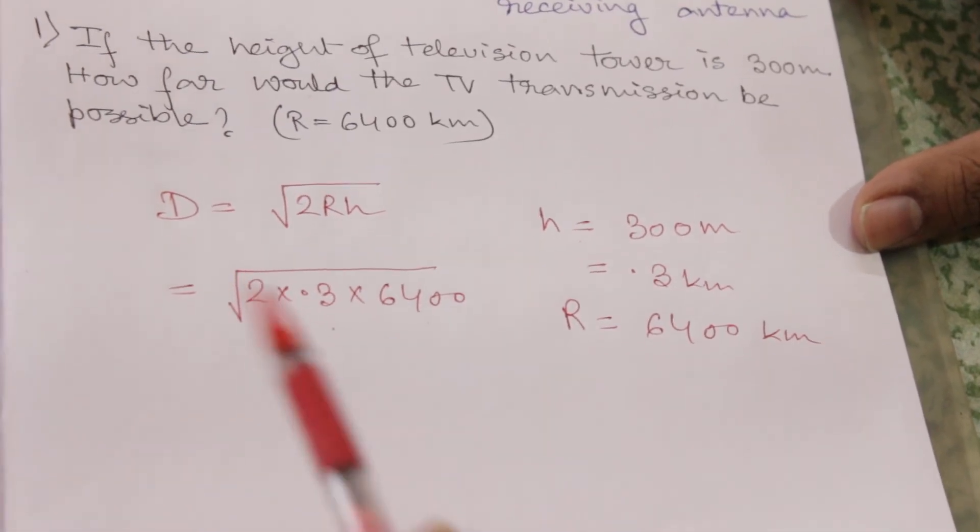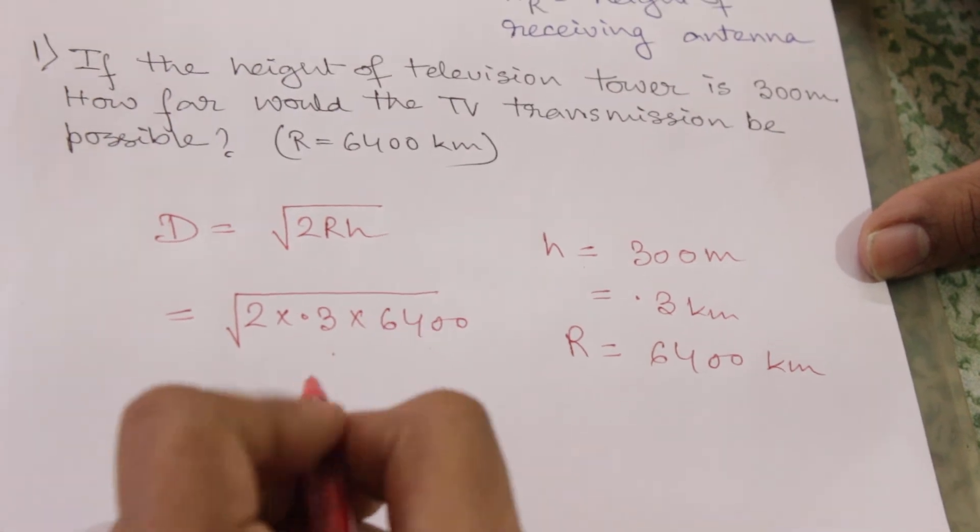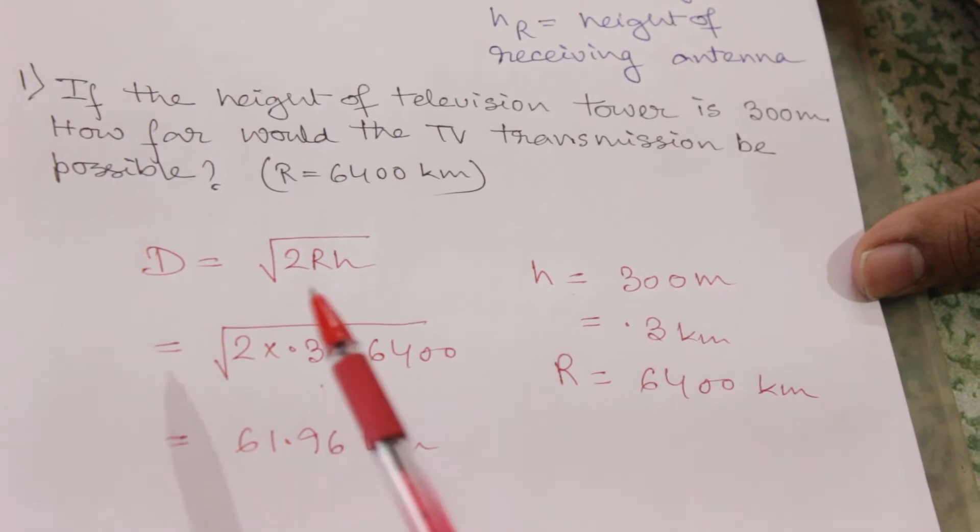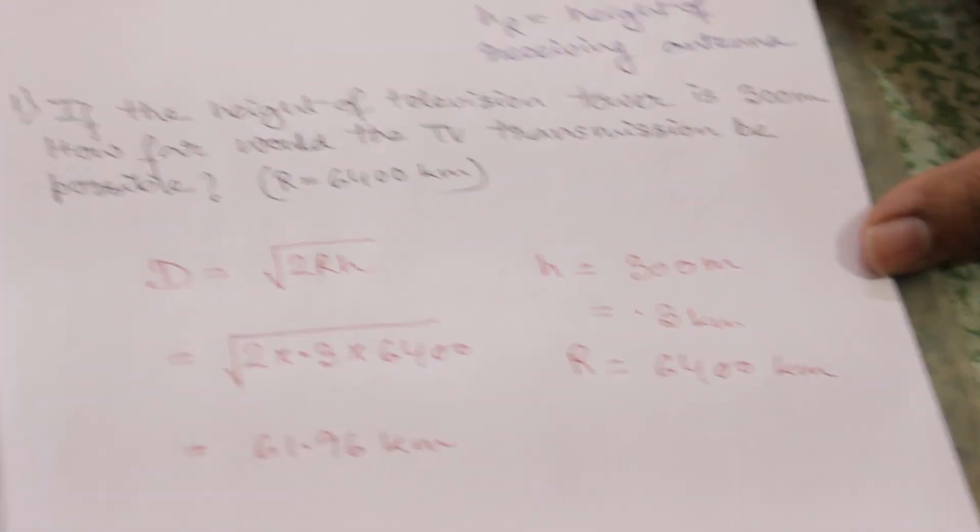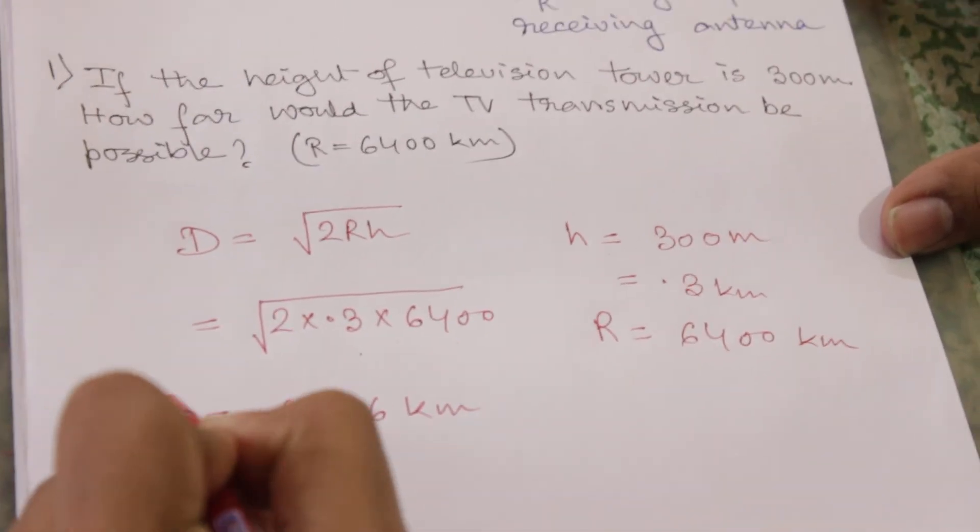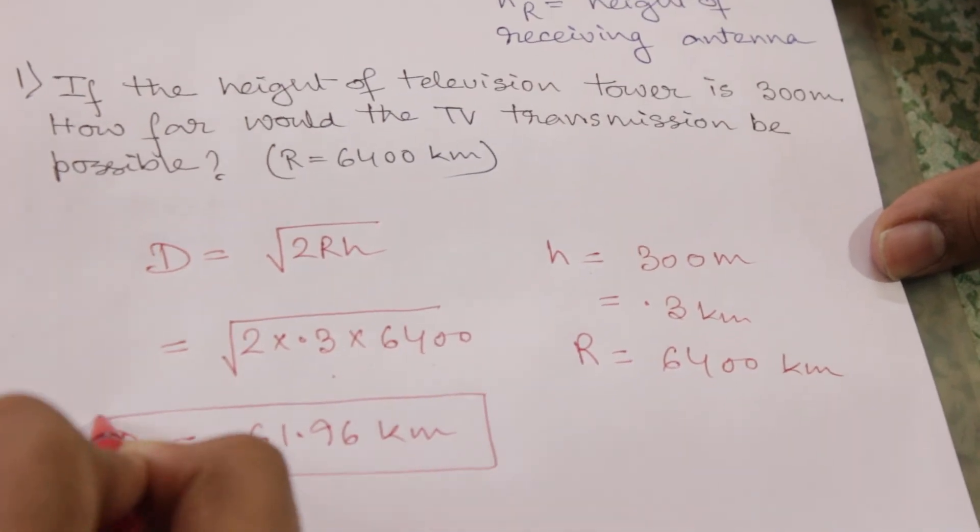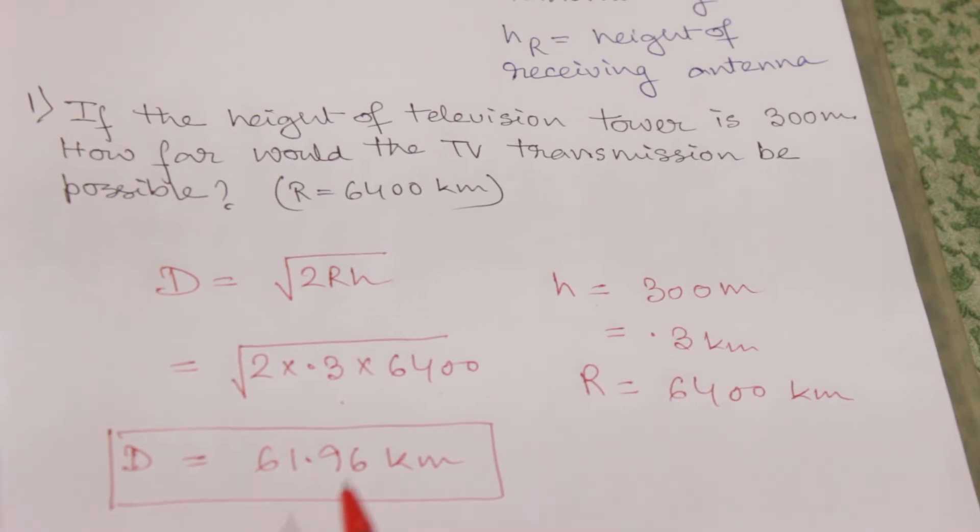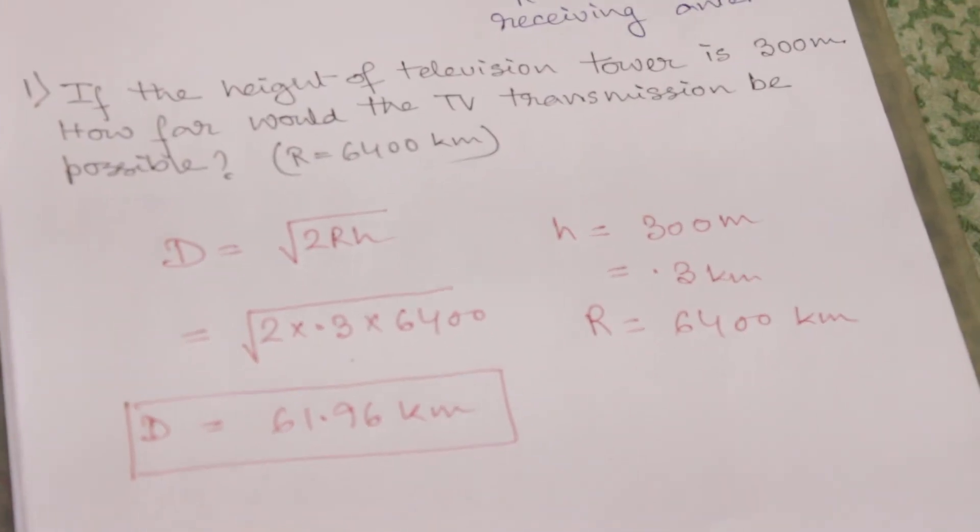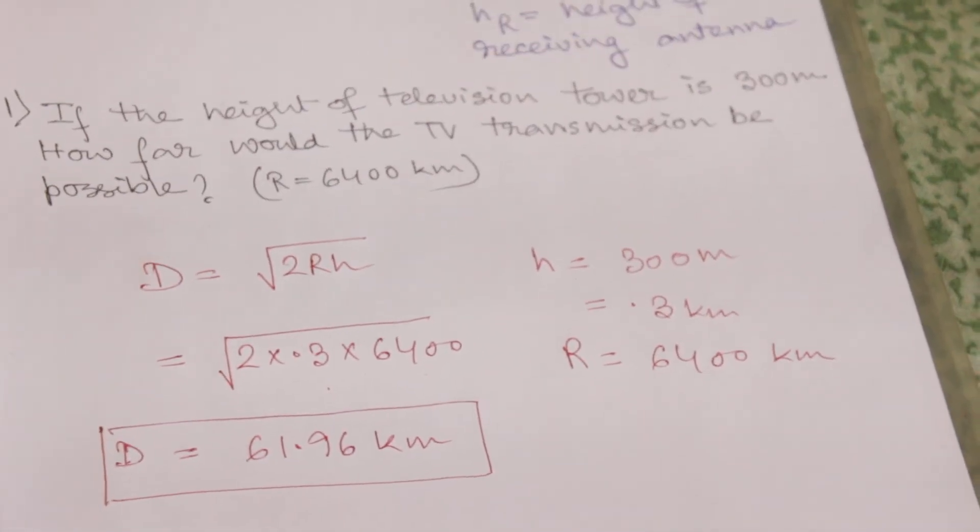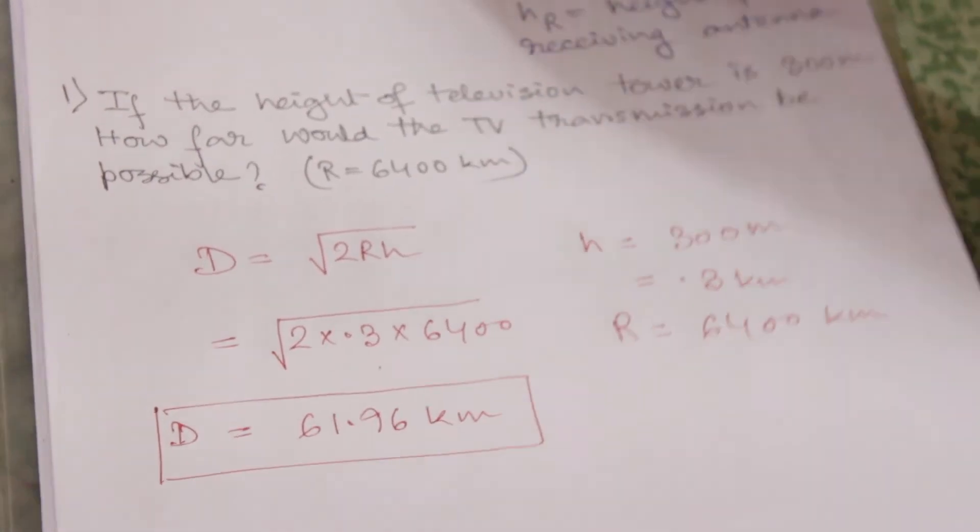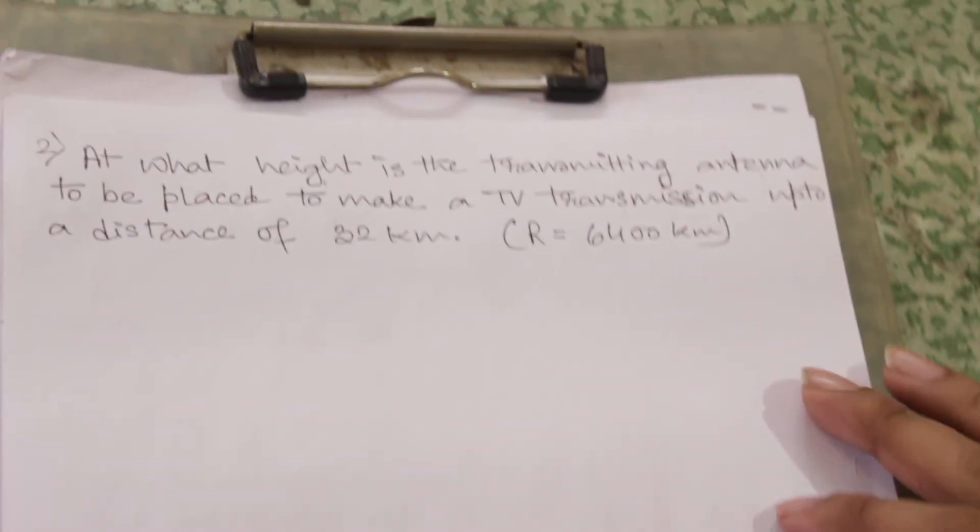Which will be equal to 61.96 kilometers. As both R and h are in kilometers, so D will also be in kilometers. So this is the final range and this is the answer. Up to 61.96 kilometers range, the TV transmission will be possible. Understood? Moving on to our next example.